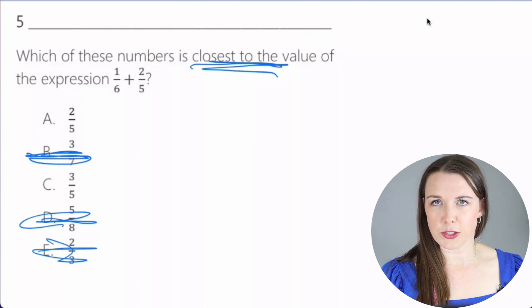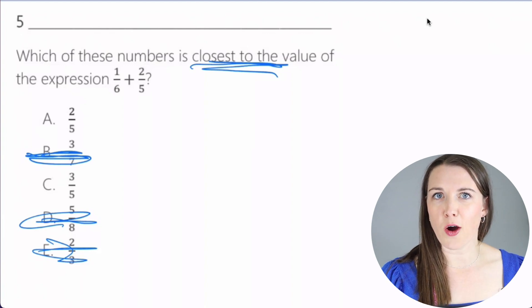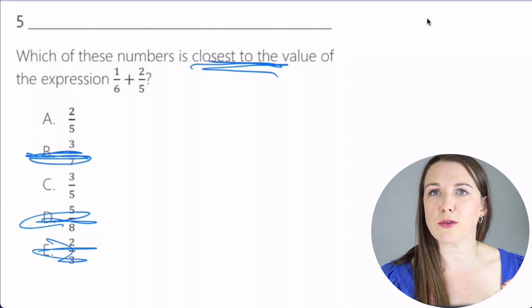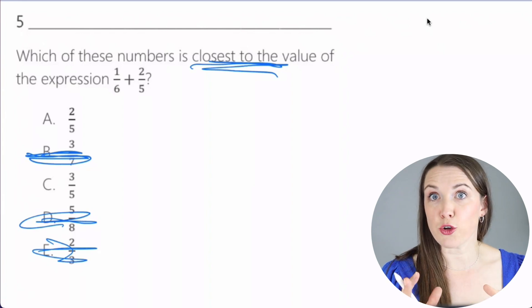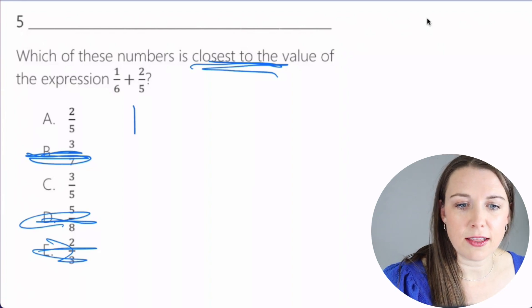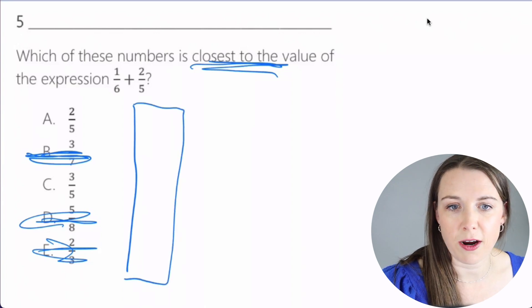So we have 2/5 and 3/5. So what I'm going to do here is I know that 1/6 is pretty close to 1/5. And let me show you how. So if I have two little bars here, we're going to call these candy bars.